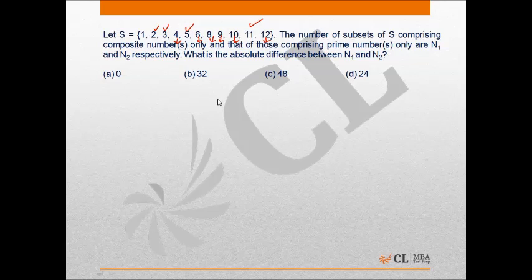The number of subsets in any set that has N elements is given by 2 raised to power N minus 1. We are not considering the null set, and here we cannot because we have to consider those sets which are having either composite numbers or prime numbers.